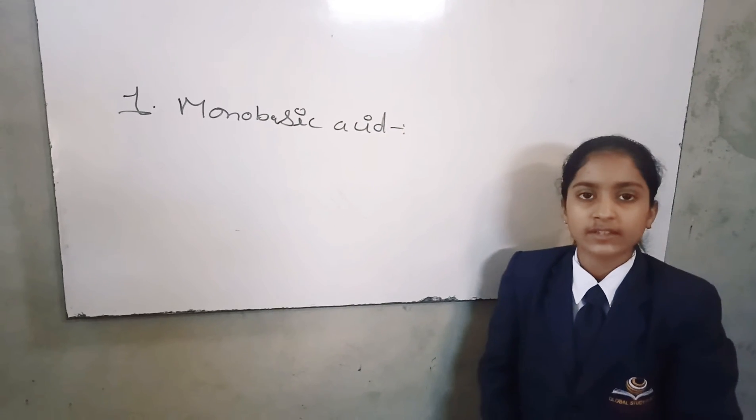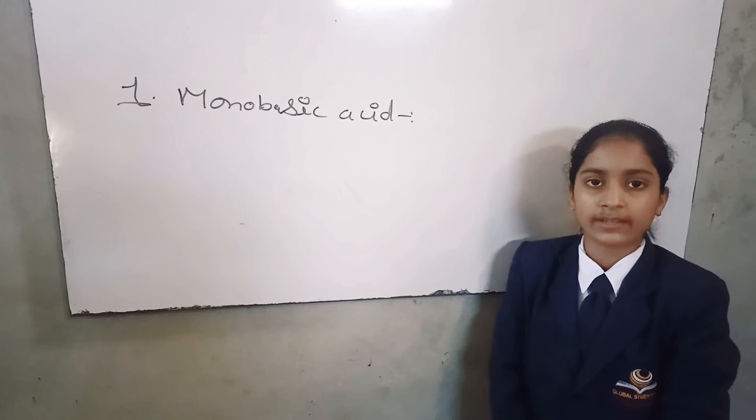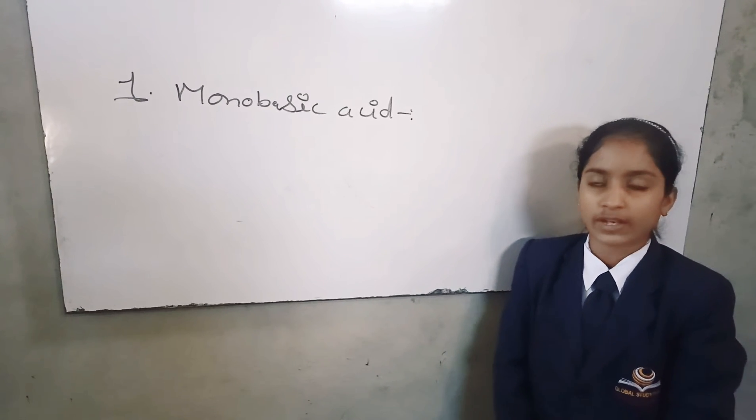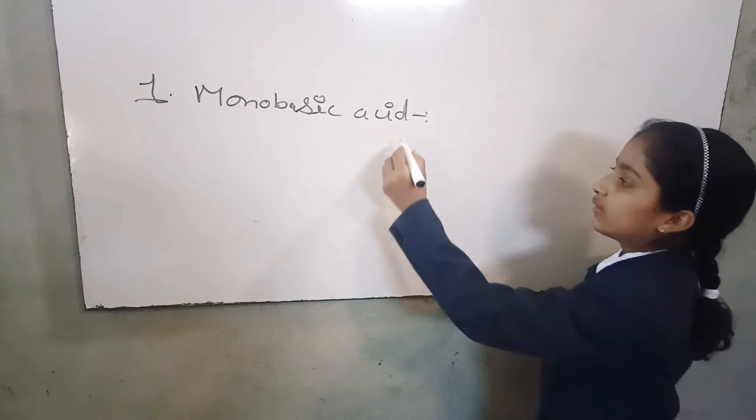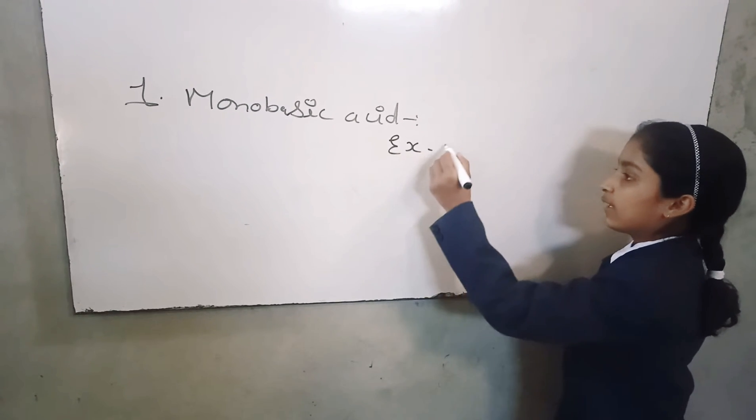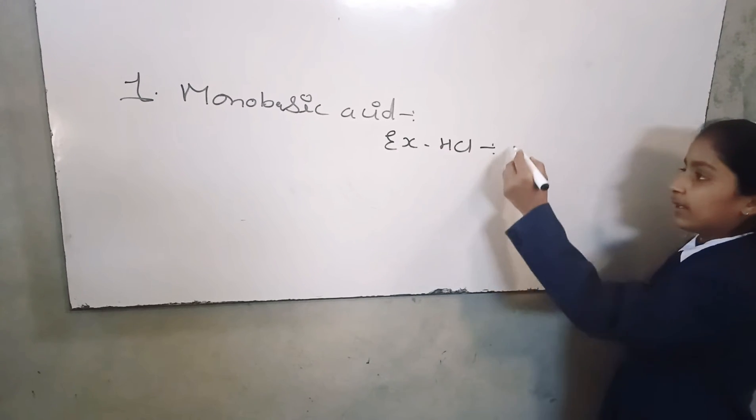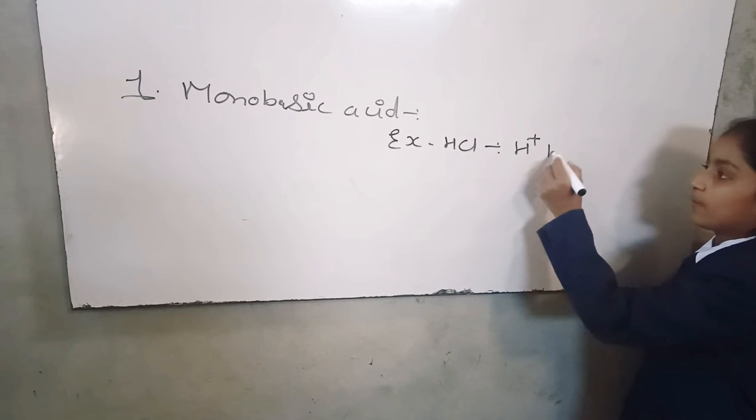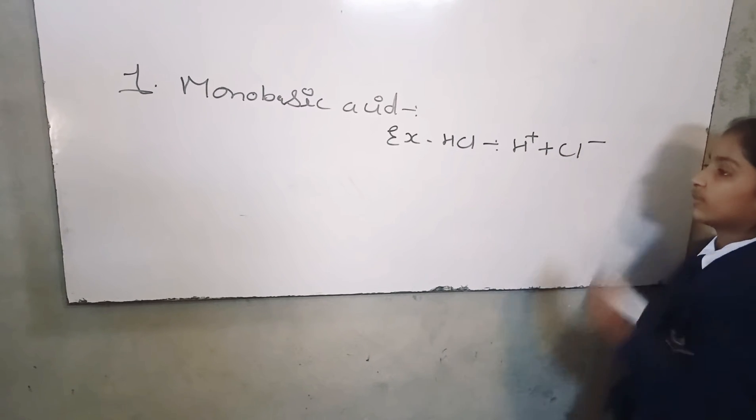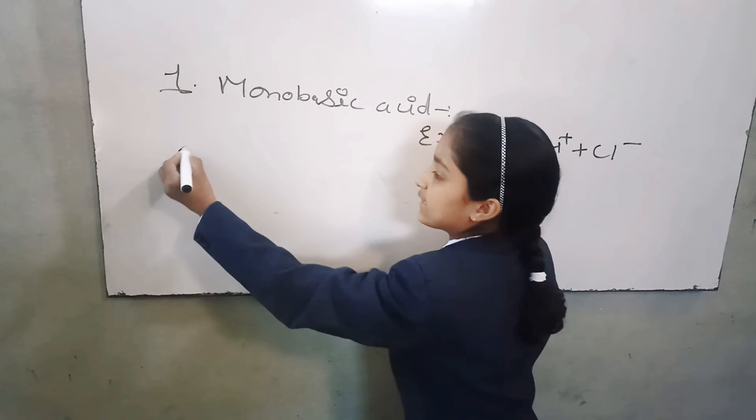The acid which give one hydrogen ion on aqueous solution. For example, HCl. When it breaks out, it makes H-positive plus Cl-negative. Second is dibasic acid.